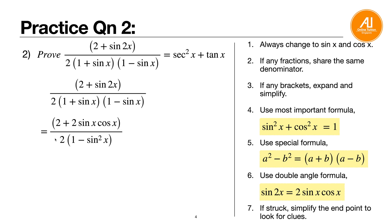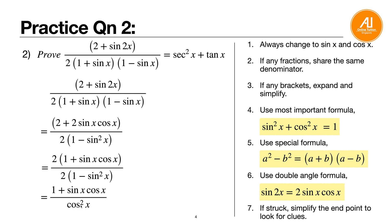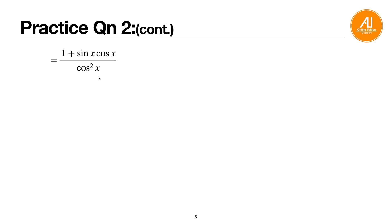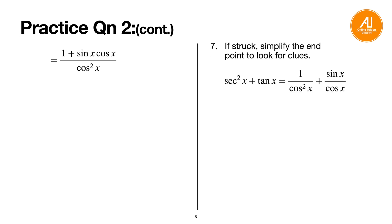Take out 2 as a common factor from the numerator: 2(1 plus sine x cosine x). On the bottom, 1 minus sine squared x equals cosine squared x. The 2s cancel, leaving (1 plus sine x cosine x) over cosine squared x. If you're stuck here, use tip seven and look at the endpoint for clues.